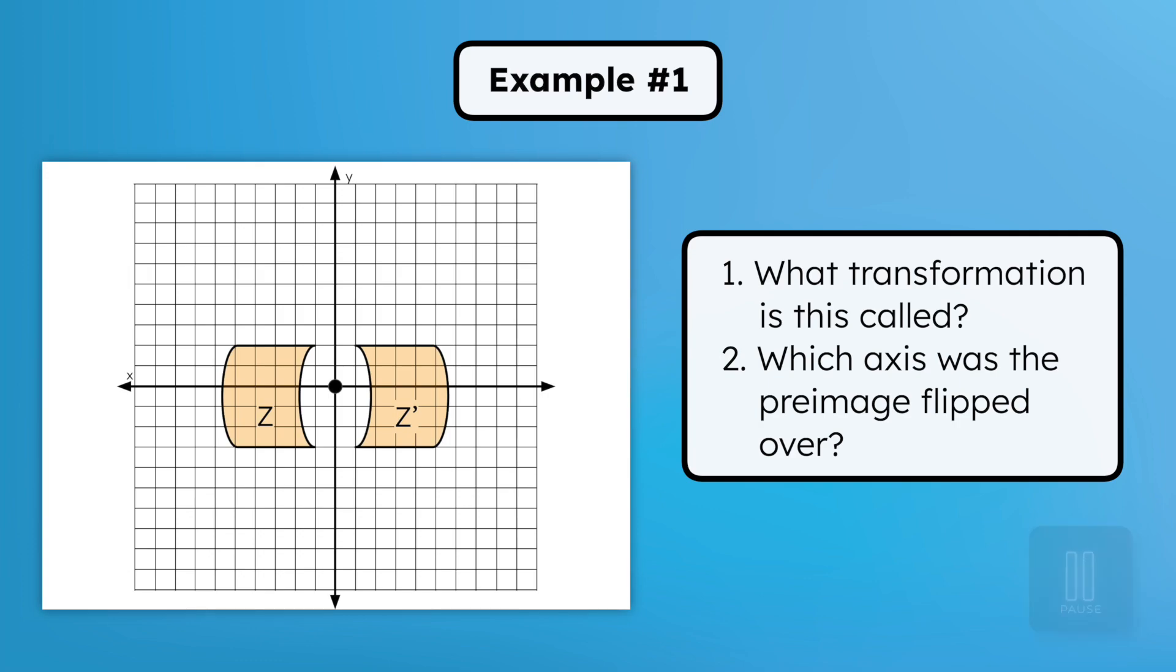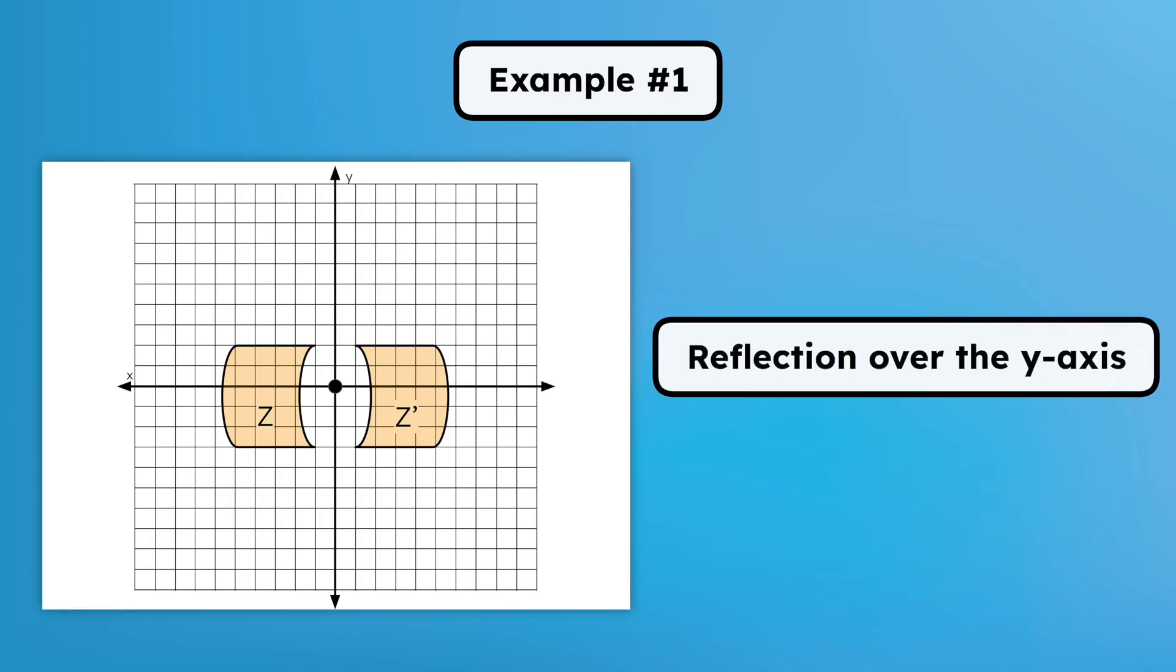This transformation is a reflection. And if we weren't sure, the second question asked which axis the pre-image was flipped over. That keyword confirms that this is indeed a reflection. The pre-image figure z was reflected over the y-axis to create the image figure z prime.